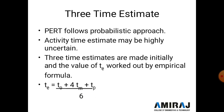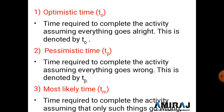Using these three values in the empirical formula, we get the estimated time te. The formula is: te = (to + 4tm + tp) / 6. This is the formula for the three time estimate.